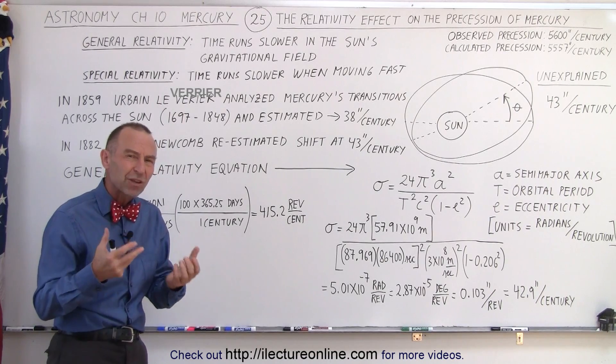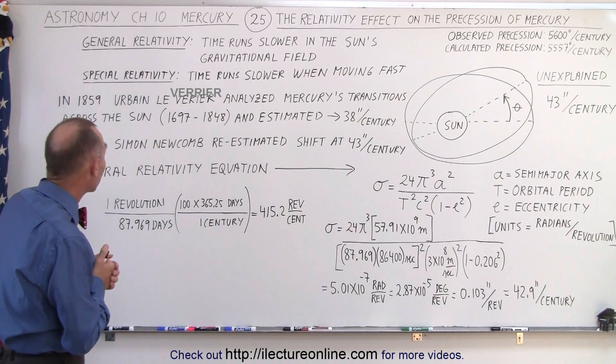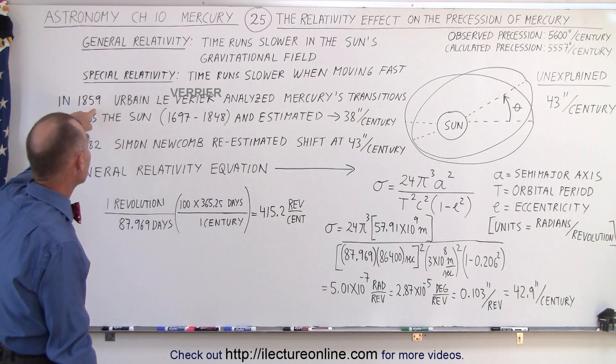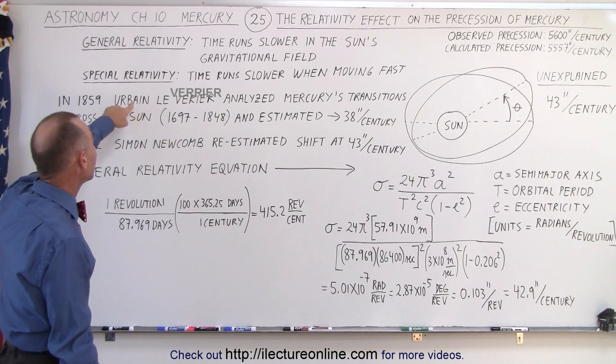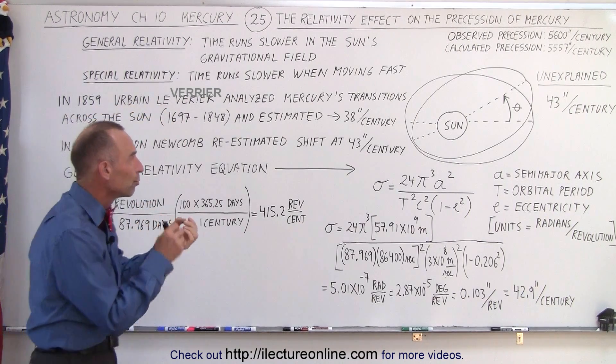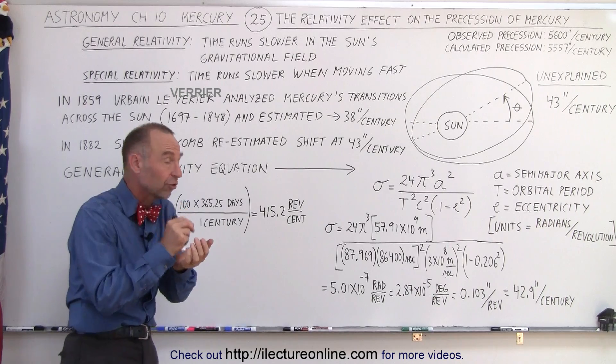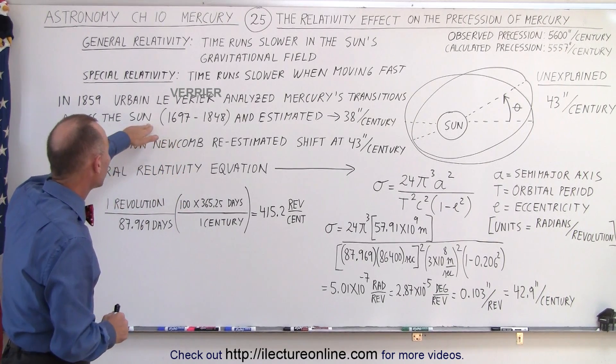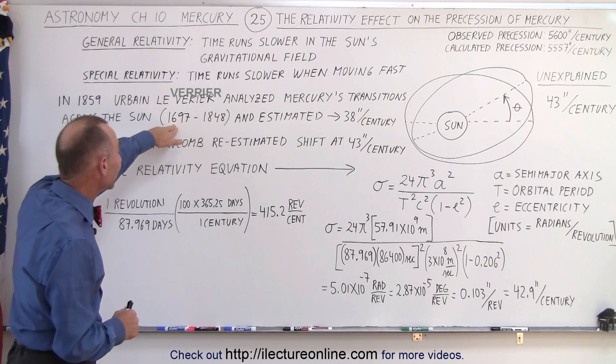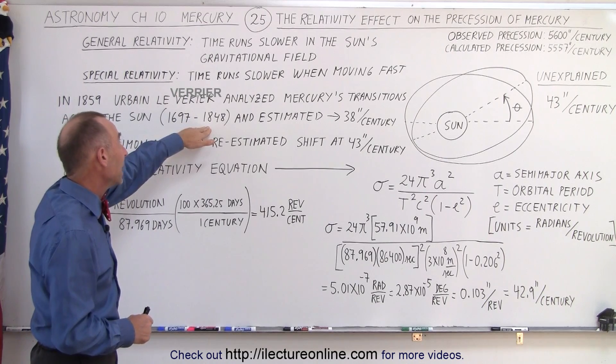But how did they actually measure that 43 arc seconds? Well it turns out all the way back in 1859, Urbain Le Verrier analyzed Mercury's transitions across the Sun's disk for all the transitions starting in 1697 all the way through 1848.